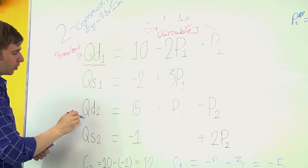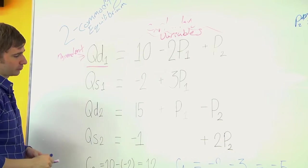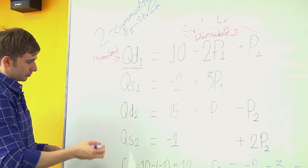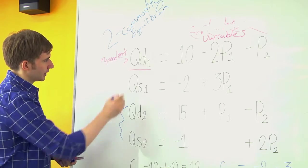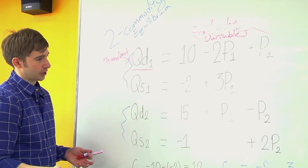So I have a QD1, a QS1, a QD2, and a QS2. So this is going to be for one commodity, and these two equations for another commodity.